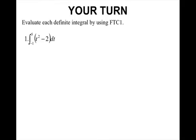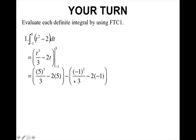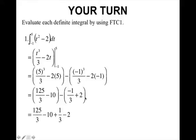Your turn. I want you to pause the video and for the next few problems, I want to see if you can find the area underneath the curve by hand without your calculator. All right, let's see how you did. You should have found the antiderivative, which is t cubed over 3 minus 2t. Plug in 5 minus what you get when you plug in negative 1. Simplify. And once you're done simplifying, you will get 30.